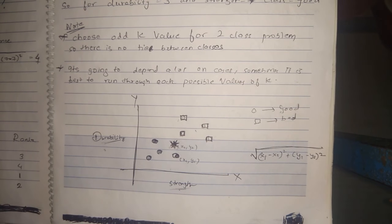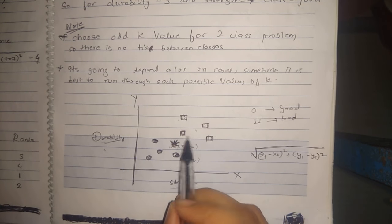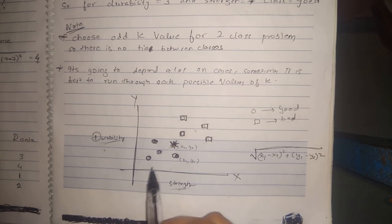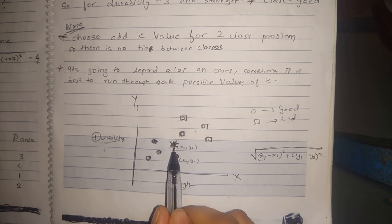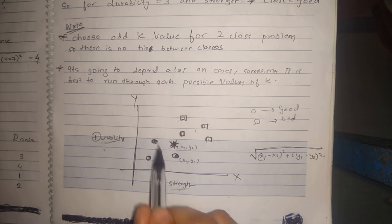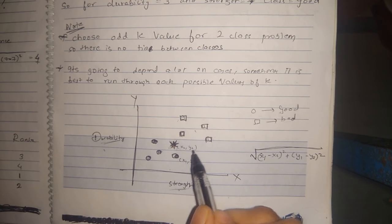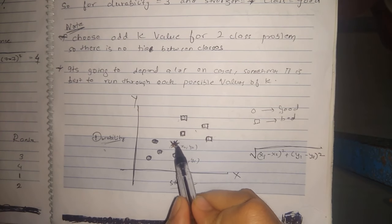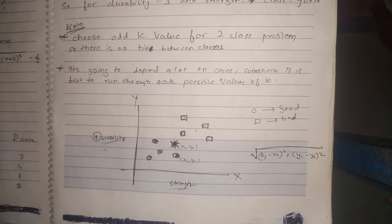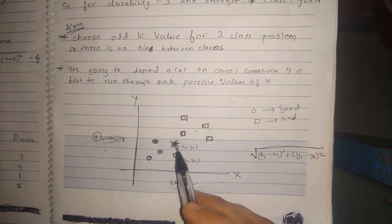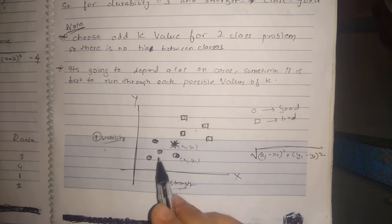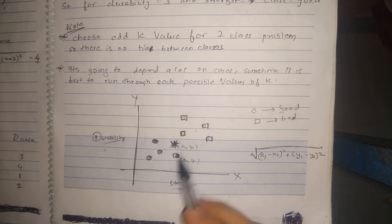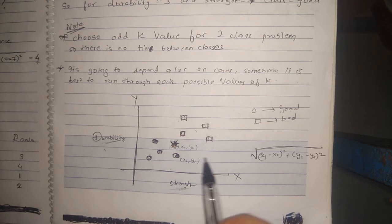For that, we need to find the distance of this point from each and every point in the graph. Based on that, we will sort the distances and then find whether this point belongs to the bad class or the good class.